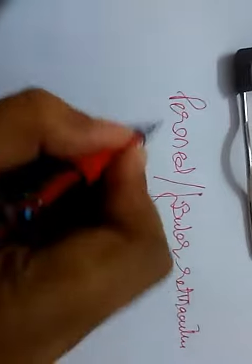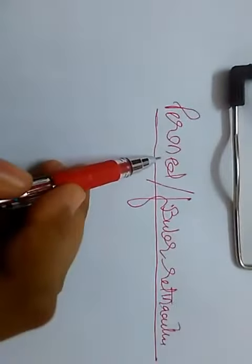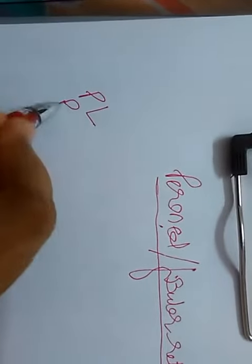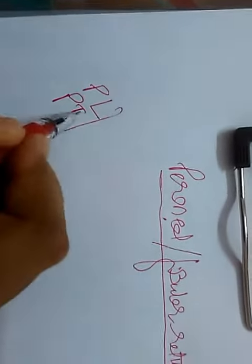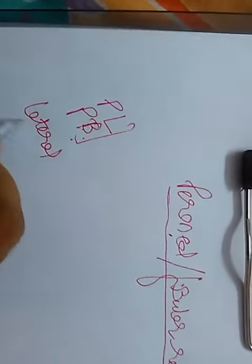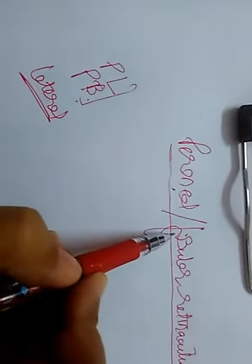Now the last retinocula — these are the peroneal or the fibular retinocula. Whenever we use the term peroneal, it means towards the lateral side. Therefore, we say peroneus longus and peroneus brevis; they form the muscles of the lateral compartment. Fibula is also towards the lateral side, so peroneal or fibular is related to the lateral surface.